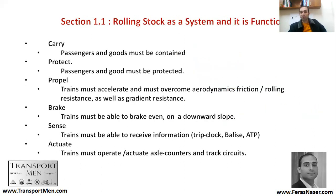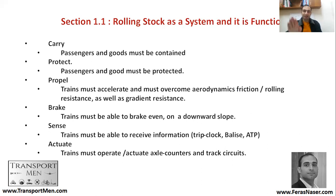The rolling stock as a system has six functions every vehicle should achieve: carry, protect, propel, brake, sense, and actuate. Carry — to carry passengers and goods in a safe manner. Protect them. Propel — to accelerate and overcome aerodynamic friction, rolling resistance, and gradient resistance. Braking — how trains should be able to brake, even on a downward slope. Sense — the train must be able to receive information, such as from a signaling system. Actuate — the train should deliver information to the signaling system, such as actuating axle counters and track circuits.